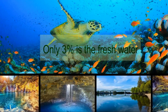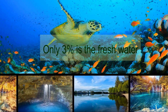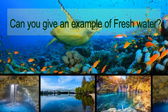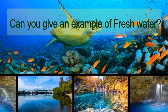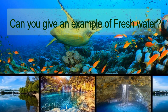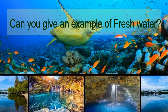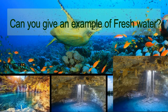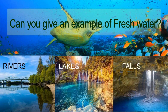Only three percent is fresh water. Can you give an example of fresh water? Yes, it includes rivers, lakes, and falls. About two-thirds of fresh water is in the form of ice, and the remaining one-third is present in streams and groundwater.